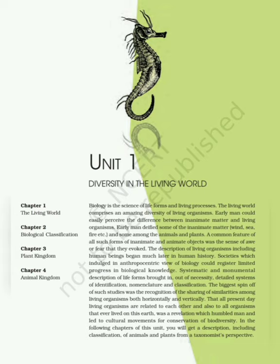In the following chapters of this unit you will get a description including classification of animals and plants from a taxonomist's perspective — Diversity in the Living World. Chapter 1: The Living World. Chapter 2: Biological Classification.